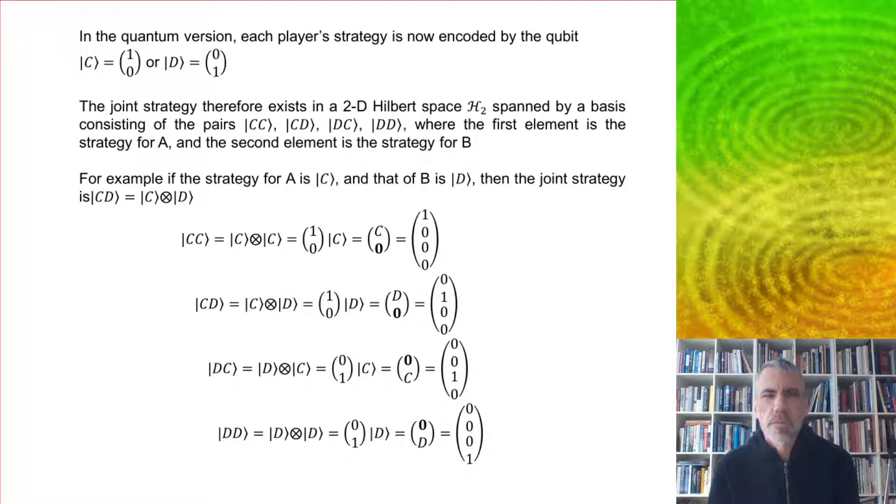In the quantum version, each player's strategy is now going to be encoded by a qubit which we can denote C or D. C is going to be |1,0⟩, D is |0,1⟩, and the joint strategy therefore exists in a two-dimensional Hilbert space spanned by these basis vectors.